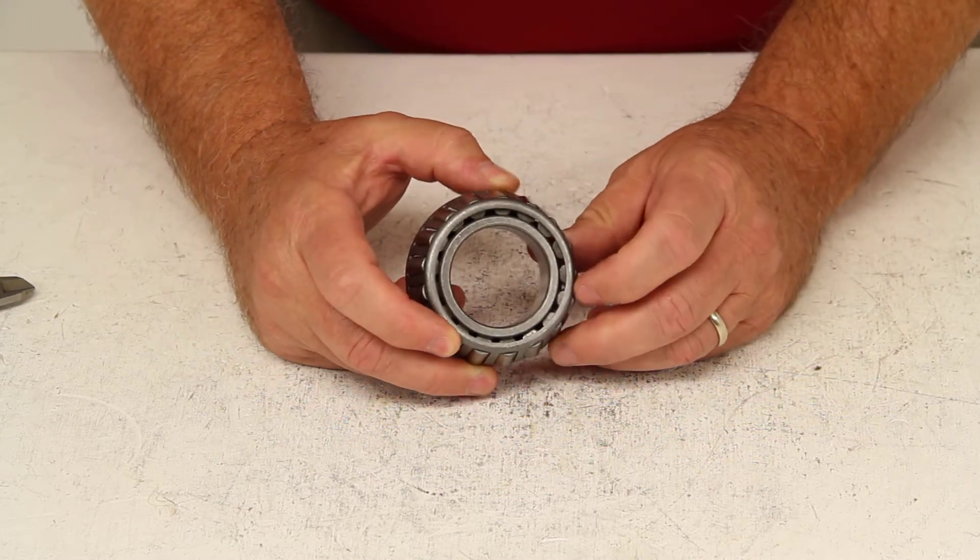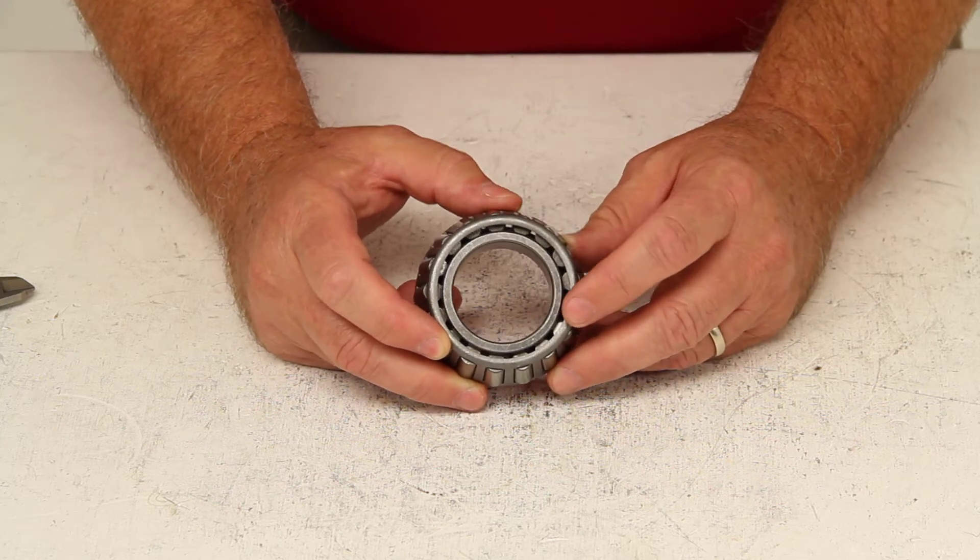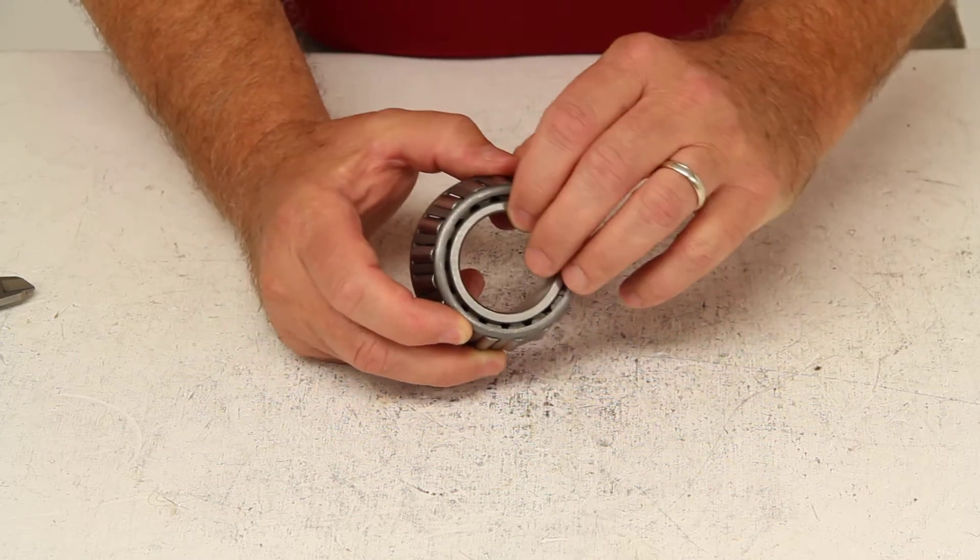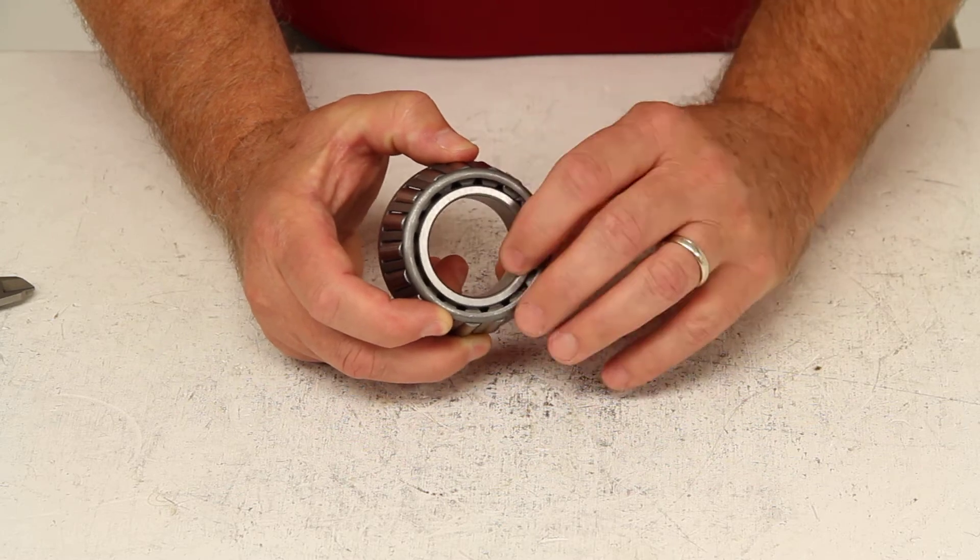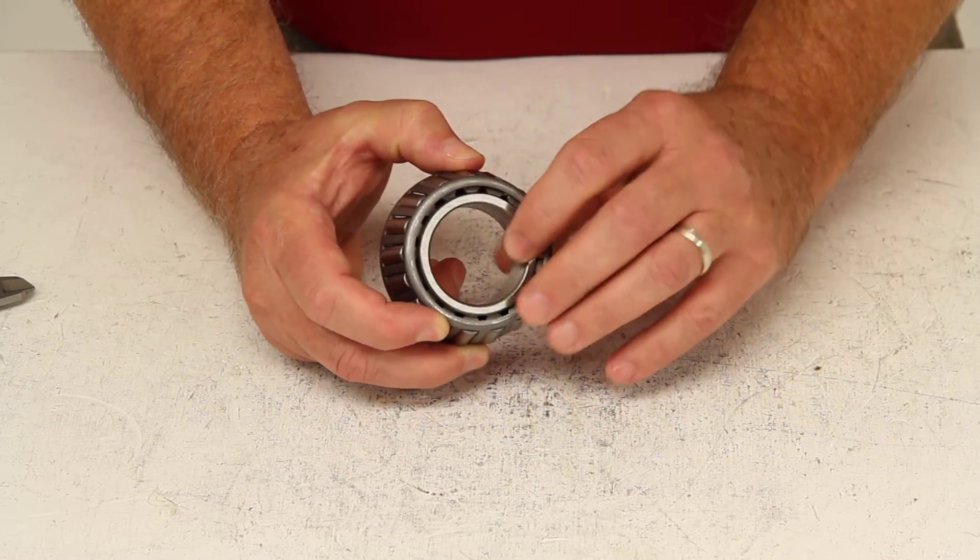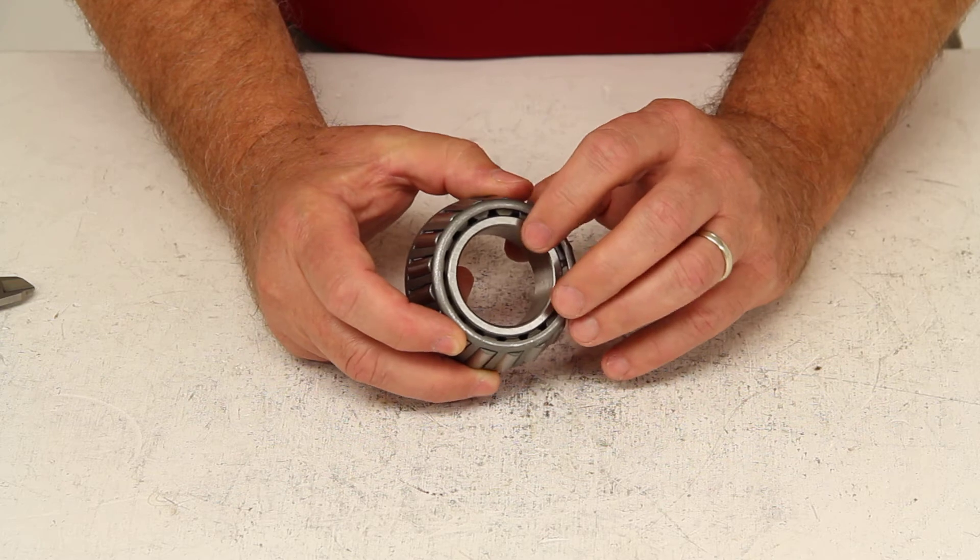The race you would need for this, which is sold separately, would be part number 2729. The important measurement on the race would be the outside diameter, and for this one, the outside diameter would be three inches even.